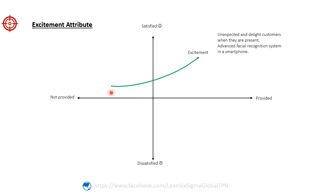Assignment attributes are unexpected and delight customers when they are present. These attributes go beyond customer expectations, creating an element of surprise or delight. They are often unique or innovative features that differentiate a product or service from competitors. Excitement attributes have the potential to generate strong positive emotions and enhance overall customer satisfaction. For example, an assignment attribute for a smartphone could be an advanced facial recognition system. If this smartphone goes beyond customer expectations by offering a secure and accurate facial recognition feature, it would surprise and delight customers, generating excitement and positive emotions.